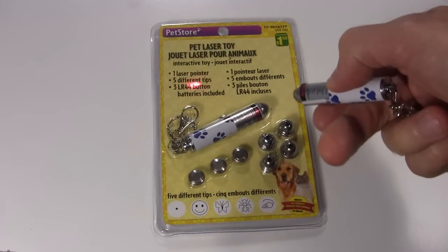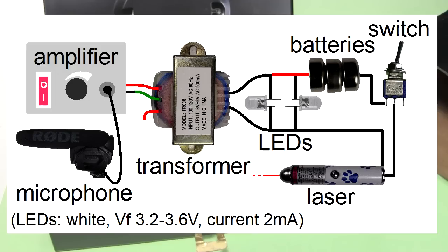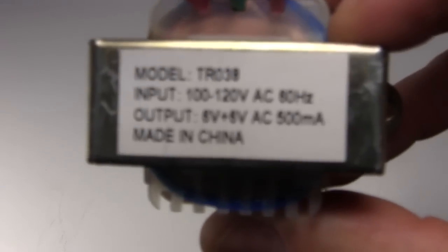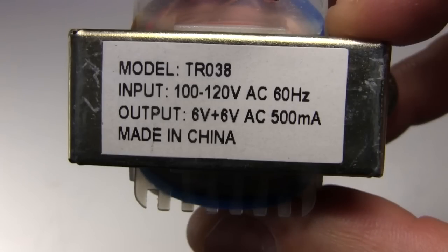The laser is a pet toy laser from a dollar store. The transformer is a simple step up transformer, in this case a doorbell transformer from a local electronics store. An audio transformer would be even better.